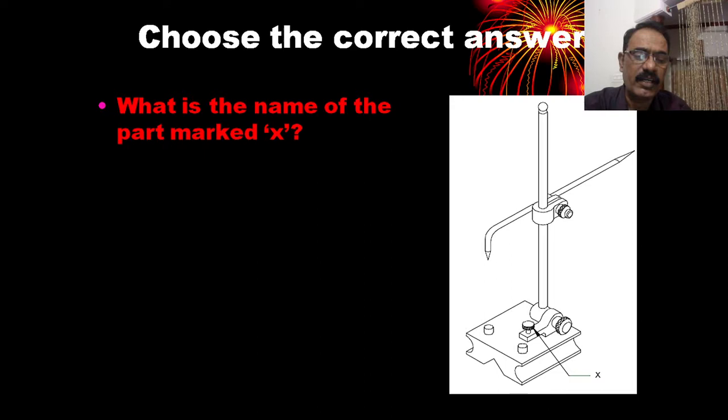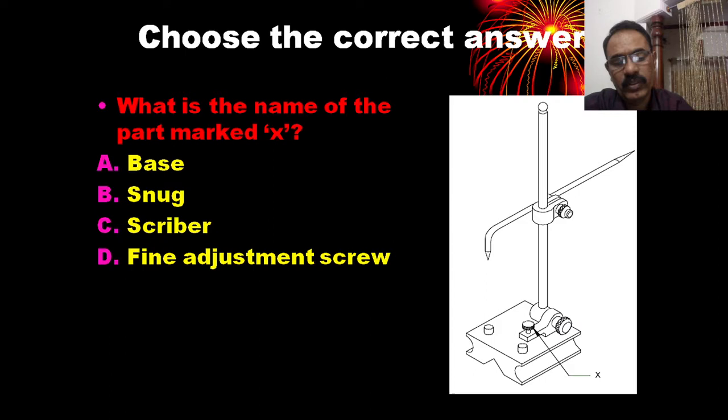What is the name of the part marked X? The options are: Base, Snug, Scriber, Fine Adjustment. It is a spindle attached to the rocker arm, and the fine adjustment screw — that is a 5-adjustment screw. D is the correct answer.